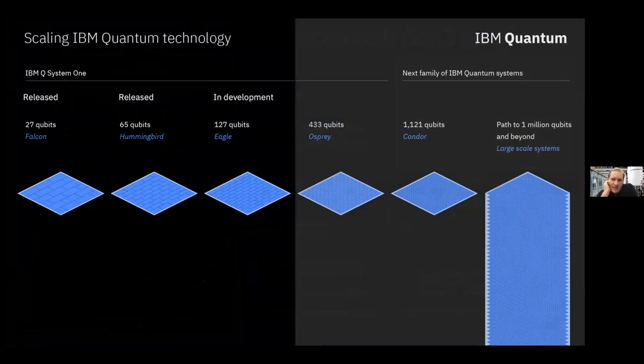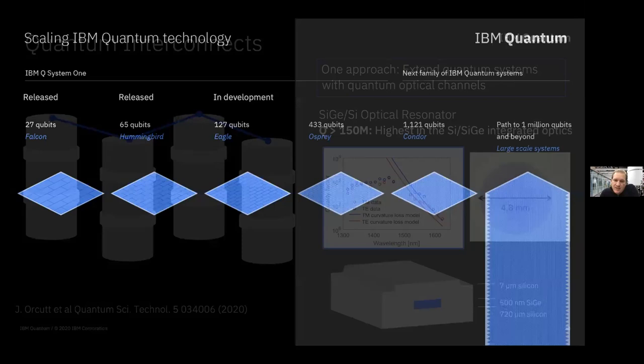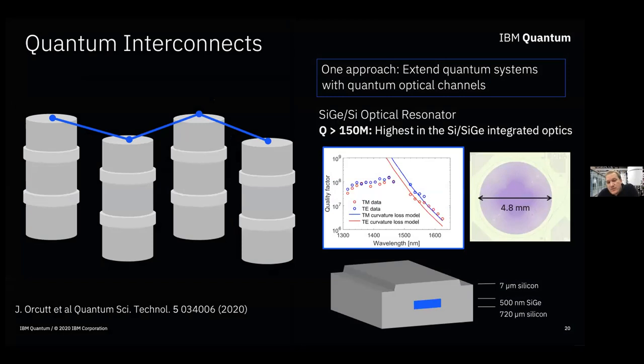On our roadmap released last year, to get to a million qubits and beyond we'll need to work out how to modularize: going from chip to chip and building interconnects. Some initial work involves thinking about how to couple dilution refrigerators together by exploiting silicon optical resonators. I would argue there are a lot of ideas that need to be worked out to determine the best way to build chip-to-chip couplings. Quantum interconnects are one of the biggest challenges we have to solve.